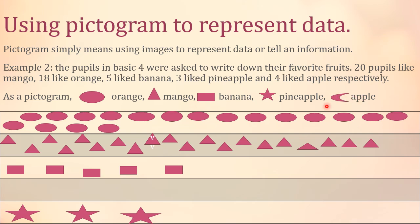How many pupils liked mango? Our image for mango is the triangle. Let's count the triangles: 1, 2, 3, 4, 5, 6, 7, 8, 9, 10, 11, 12, 13, 14, 15, 16, 17, 18, 19, 20 — twenty triangles. For banana, the rectangular shape — five people liked banana, so we count 1, 2, 3, 4, 5 rectangles. This is how we use a pictogram to represent data.